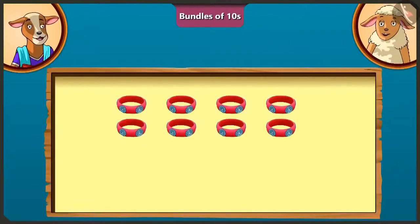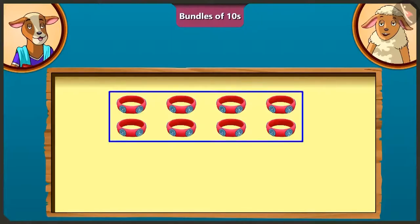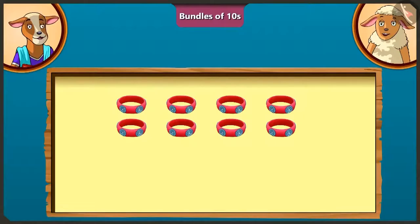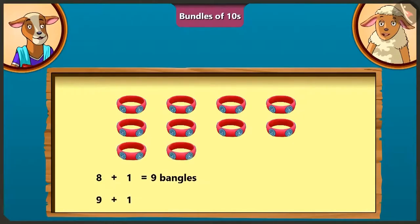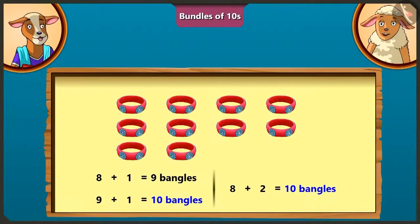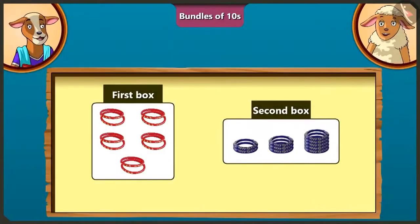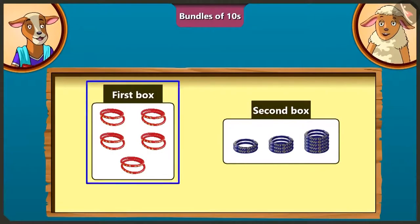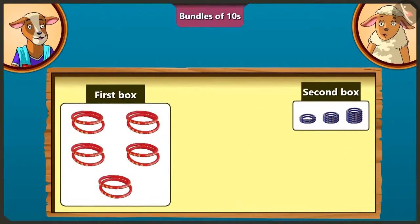Today, we will learn about some interesting facts related to objects in the box or bundle of tens and their number. Lily, if I have eight bangles, how many bangles would I have to add so I would have ten bangles? On adding one to eight, we get nine. By adding one to nine, we get ten. So, we will have ten bangles by adding two bangles to eight.